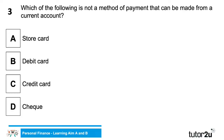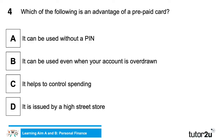Which of the following is not a method of payment that can be made from a current account? Is it A) store card, B) debit card, C) credit card, or D) a cheque? Lots of answers coming through — Lily and Connor have both gone for A. The correct answer is store card, as it's not directly attached to the current account, whereas the other three options are. Great responses — most people got that correct.